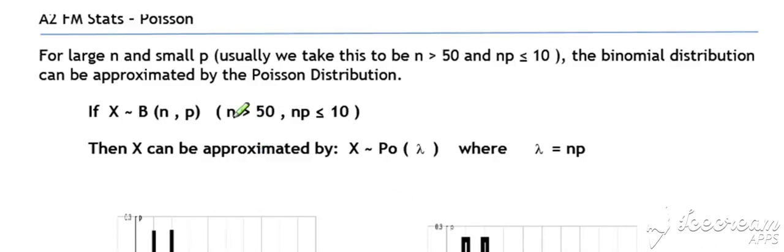Moving on to consider the Poisson approximation. If we've got a large n value and a small p value, ballpark figures usually we say n to be greater than about 50 and p small enough so that np is less than or equal to 10, then the binomial distribution with those values for n and p can be approximated by a Poisson.